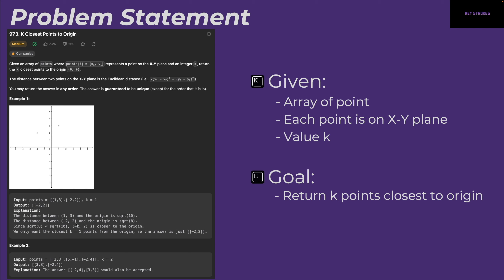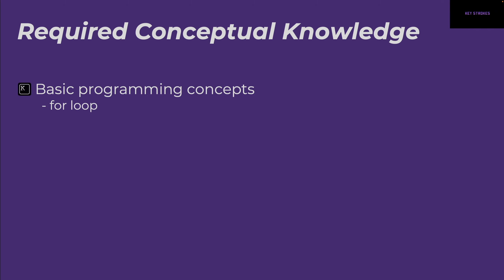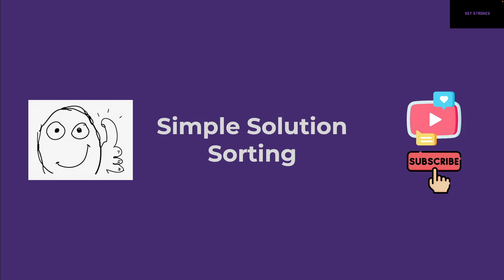Since √8 is smaller than √10, [-2,2] is the answer. In the second example with three points and K=2, the answer is [3,3] and [-2,4]. Swapping the order is acceptable as well. To solve this problem you need basic programming concepts like for loops, how to operate on arrays, and knowledge of priority queues for the queue-based solution.